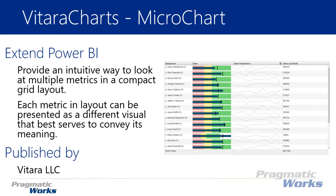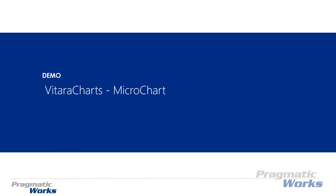Each metric is laid out to be presented as a different visual type — so you can have a bullet chart, a line chart, and a column chart all right next to each other, as well as any aggregates that you want to see. You use it in the way that's going to best convey meaning to you. This one is designed by Viterra, so let's go ahead and take a look at how to use the Viterra Charts Micro Chart.